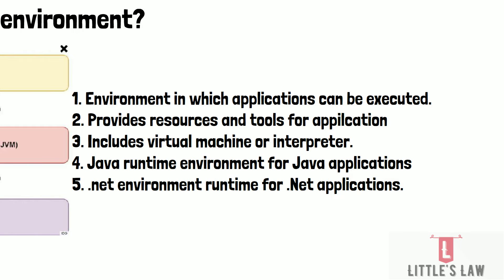Every programming language and platform has its own specific runtime environment. For example, the Java Runtime Environment (JRE) is used to execute Java applications, and the .NET runtime environment is used to execute applications written in the .NET framework. These runtime environments are often transparent to the user, as they are responsible for executing the application and managing its resources behind the scenes. However, they are an important and necessary component for the application to run properly.